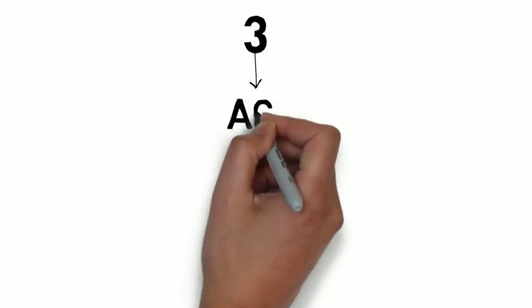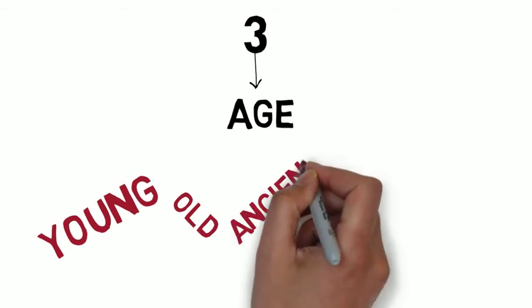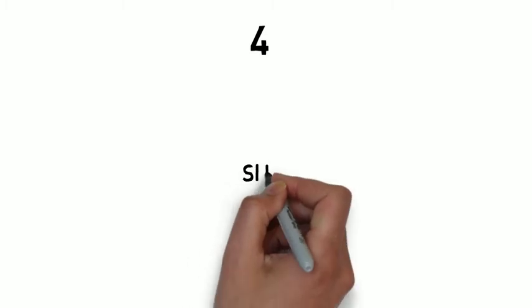Then add an adjective that tells its age, young, old, ancient, newly born, and others. Write after an adjective that describes its shape.